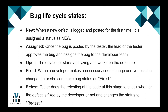Third is Open. The developer starts analyzing and works on the defect fix. Fourth is Fixed. When a developer makes a necessary code change and verifies the change, he or she can make the bug status as Fixed. Next is Retest. The tester does the retesting of the code at this stage to check whether the defect is fixed by the developer or not, and changes the status to Retest.